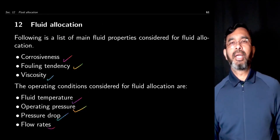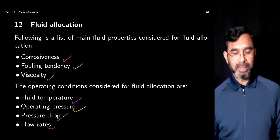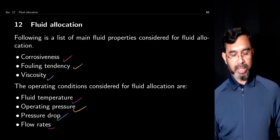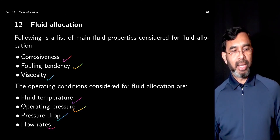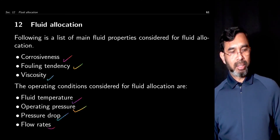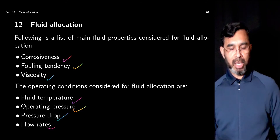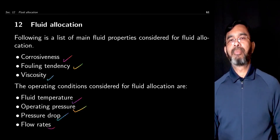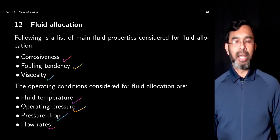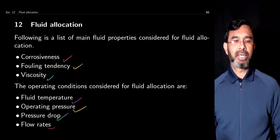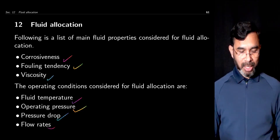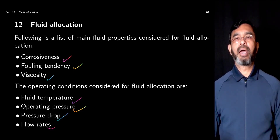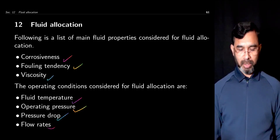In summary, the corrosive fluid goes to the tube side, the fluid having a fouling tendency goes to the tube side. For viscous fluid, depending on flow conditions, it can go to either the tube side or the shell side. For high temperature fluid it typically goes to the tube side. If the fluid is at high pressure or the allowable pressure drop is low, it goes to the tube side, and fluid with the higher flow rate also goes to the tube side.